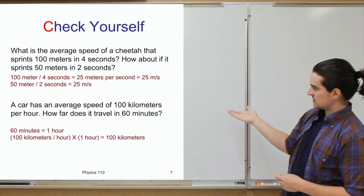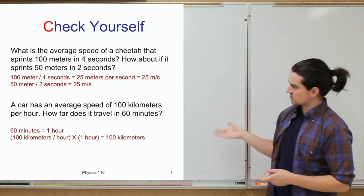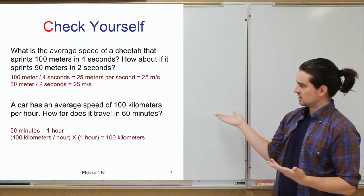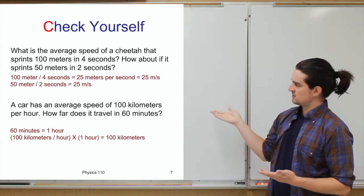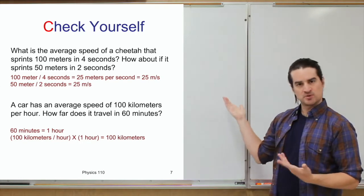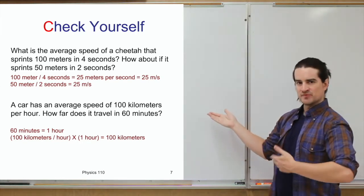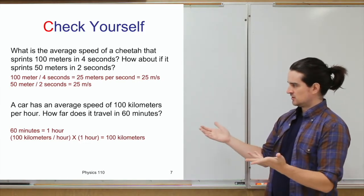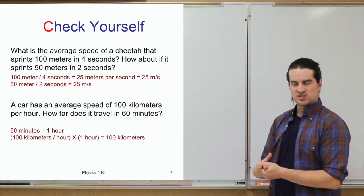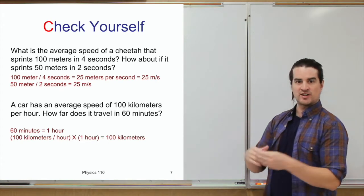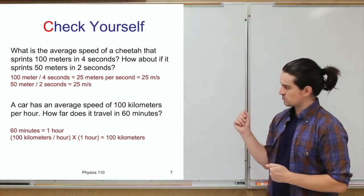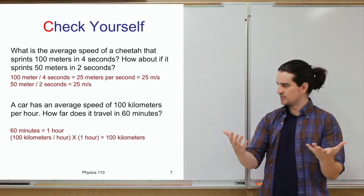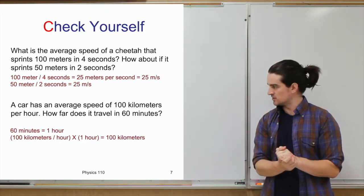For the second question, calculating how far something went, the tricky part is that the speed was given in kilometers per hour but the time was in minutes. You can't use kilometers per hour and minutes together directly — you need kilometers per hour and hours. Since 60 minutes equals one hour, you multiply that speed by one hour and get 100 kilometers.